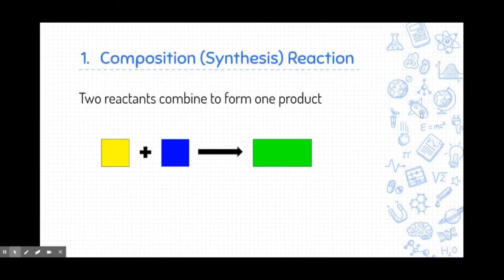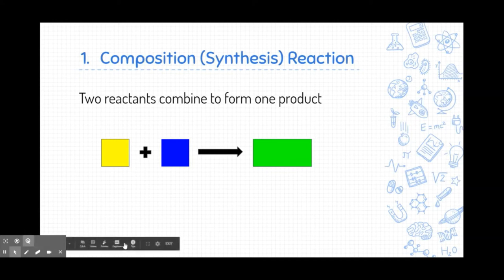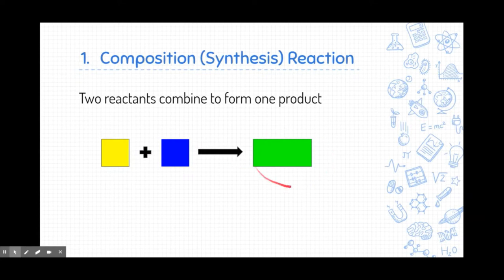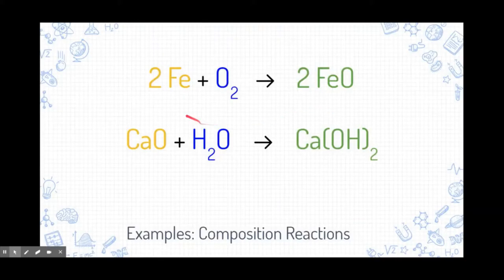Let's get going with each type. I would recommend writing down what the reaction generally does, and then I'm going to give you two examples — write one of them down in your notebook. Our first one is composition or synthesis reactions. We have two reactants — a yellow reactant and a blue reactant — and those reactants combine after a chemical reaction to form one product. So yellow plus blue makes one green giant product. For example, iron and oxygen come together to make iron 2 oxide, which is one single product. So this is a composition or synthesis reaction.